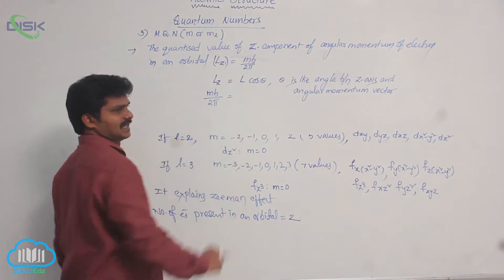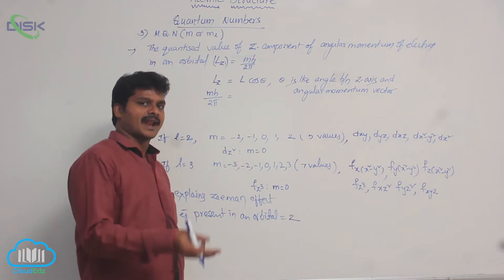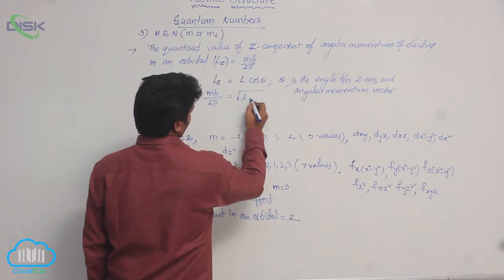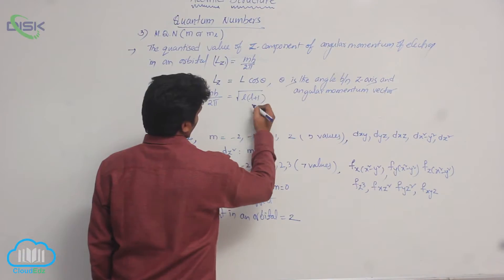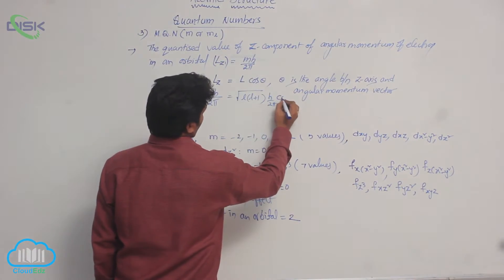What is L? L is nothing but angular momentum of electron in an orbital, which is given by the expression square root of L into L plus 1 into h by 2 pi. This is capital L into cos theta.